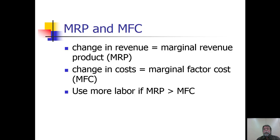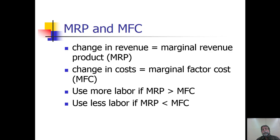In general, you'd use more labor if revenue goes up by more than costs go up — in other words, if marginal revenue product is greater than marginal factor cost. You'd choose to use fewer workers if the additional revenue they're generating is less than you have to pay them — that is, if the revenue generated by the last worker is less than the additional costs of that labor.